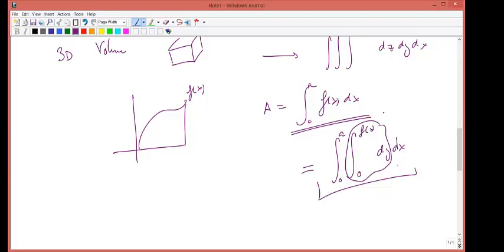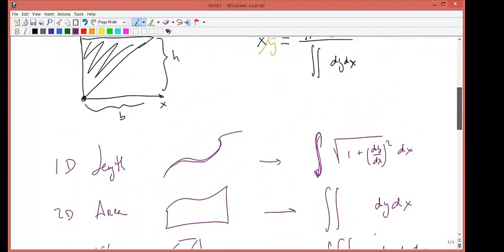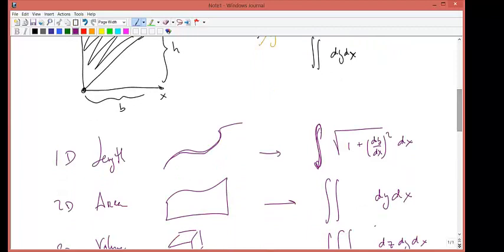As you integrate the inner integration, you will end up with either the shell or the disk method. So the advantage of remembering length one integral, area double integral, volume triple integral, is that as you're going to integrate the integration inside, you're going to pick up the stuff that you have to learn in Calculus 2. Let me make space.